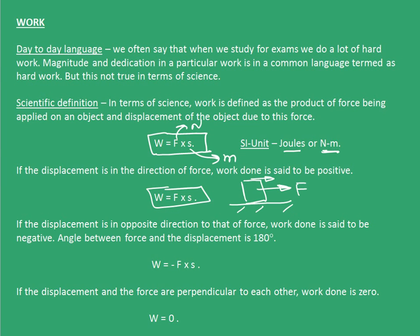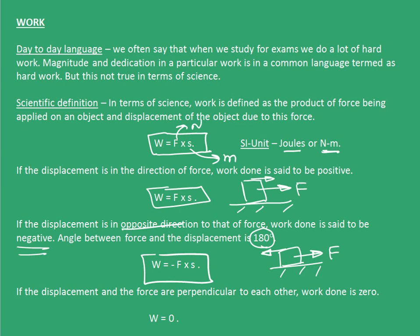Similarly, if the displacement is in the opposite direction to that of force, the work done is said to be negative. The angle between force and displacement in this case is 180 degrees. So if I have a block and I apply a force F, but the block is moving in the backward direction with displacement in the backward direction, work is negative F into S. Now if the displacement and force are perpendicular to each other, work done is zero.